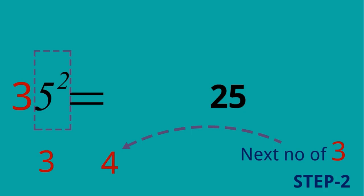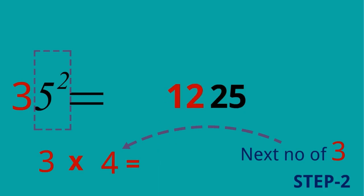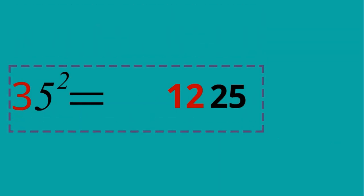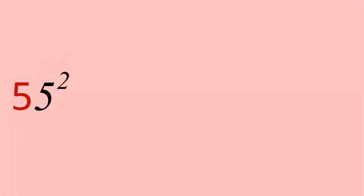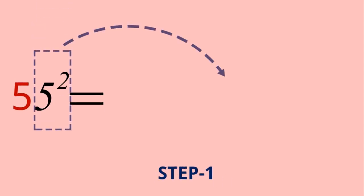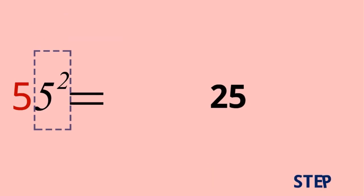We multiply these two: 3 multiplied by 4 is equal to 12, and this 12 will be shifted to here. So it becomes 1225. We can say 35 squared is equal to 1225. One more example: 55 squared. Step one: 5 squared means 25.